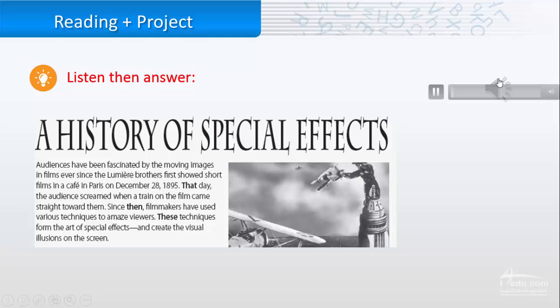A history of special effects. Audiences have been fascinated by moving images in films ever since the Lumiere brothers first showed short films in a café in Paris on December 28, 1895. That day, the audience screamed when a train on the film came straight toward them. Since then, filmmakers have used various techniques to amaze viewers. These techniques form the art of special effects and create the visual illusions on the screen.